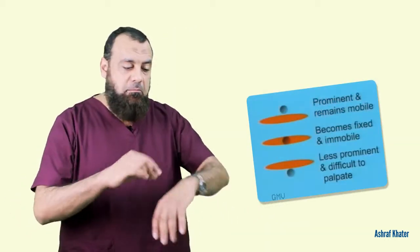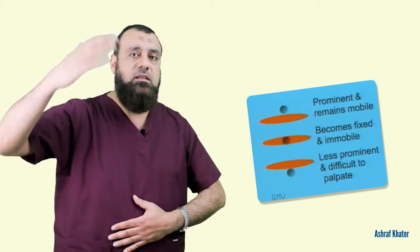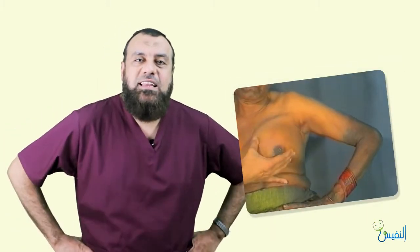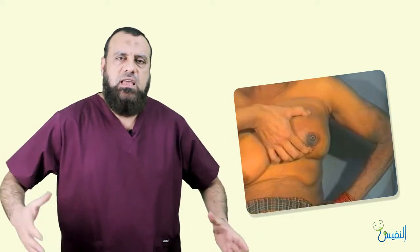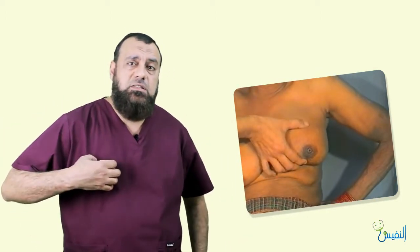A swelling fixed to bone is either a bony swelling from the start or a tumor infiltrating the bone. To summarize: pinch the skin to test skin attachment; put the muscle into action — if the swelling is superficial to the muscle it becomes prominent, if deeper it disappears. In muscular swellings, such as breast cancer invading the pectoralis major, mobility is restricted with muscle contraction.